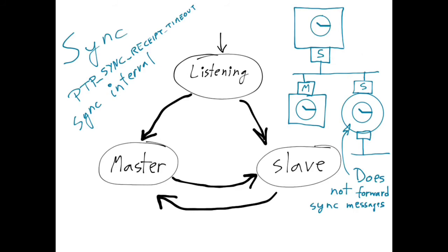But now imagine that the master crashes, so it no longer transmits any sync messages. The slaves would detect this after the PTP sync receive timeout and decide that they need to become masters now.